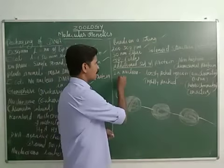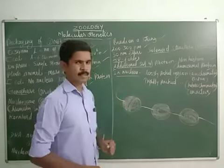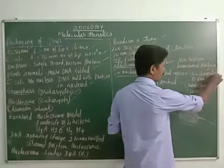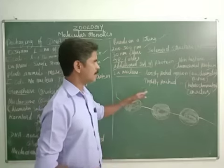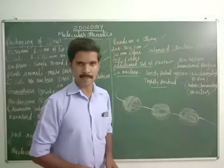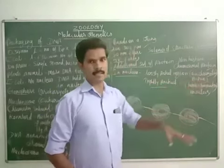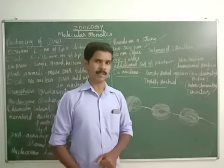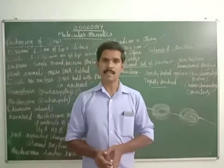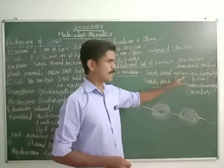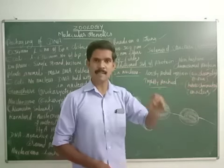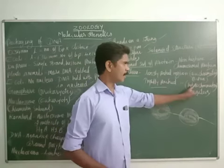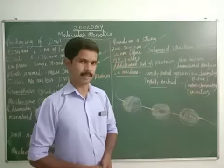In the nucleus, some regions of chromatin fibers are loosely packed — those regions are called euchromatin, and this region is transcriptionally active. But some regions are tightly packed — those regions are called heterochromatin, and these regions are inactive.